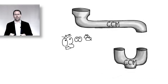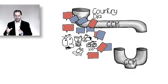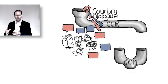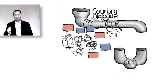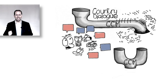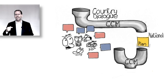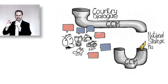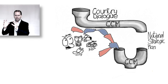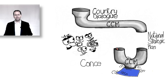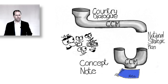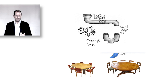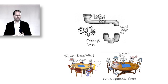Following the country dialogue, the CCM will develop a document called the National Strategic Plan, which is really the country's plan to address HIV, TB and malaria. Based on the country dialogue and the National Strategic Plan, the CCM will develop and submit a concept note, which will be reviewed by an independent technical review panel and the Global Fund's Grant Approvals Committee.